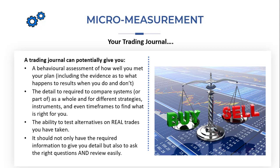Once you've got a critical number of results, it's very easy to go back and test alternatives on real trades you have taken. For example, if you're using a 20 EMA price cross as your trail stop strategy, you can then look back on the trades taken and ask whether you would have been better using perhaps a 30 EMA price cross.